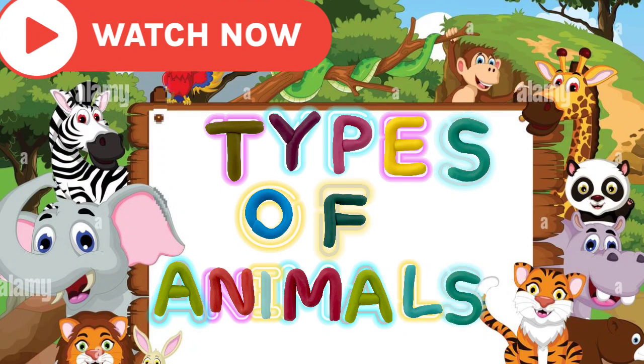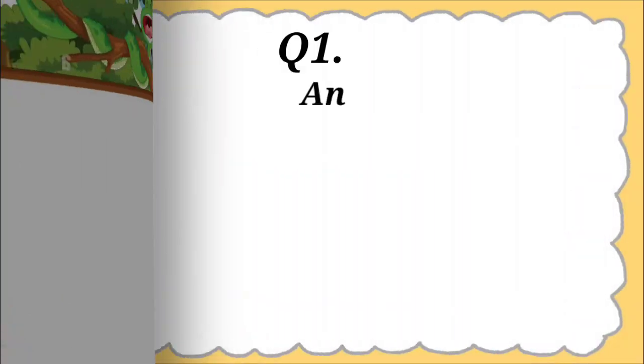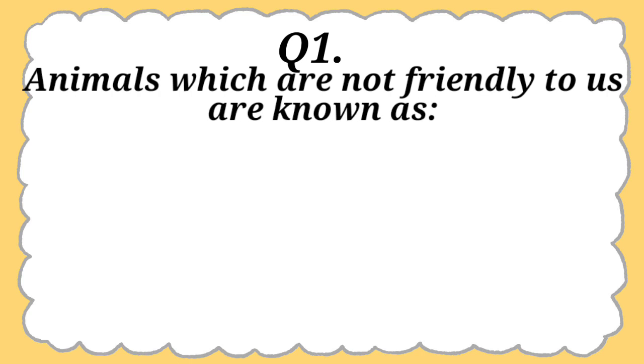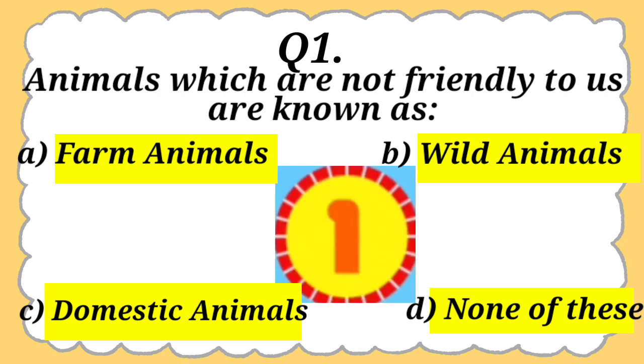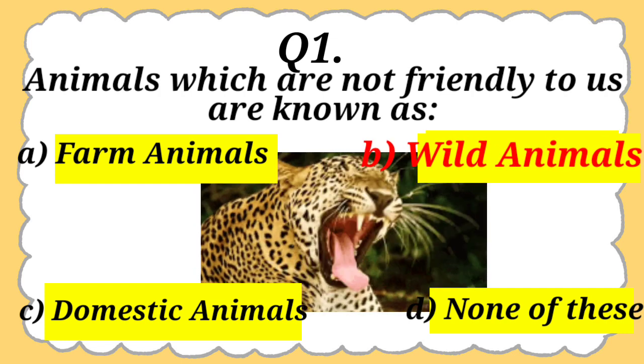Types of Animals. Question 1: Animals which are not friendly to us are known as farm animals, wild animals, domestic animals, or none of these. And the answer is wild animals.